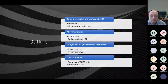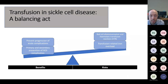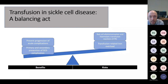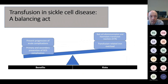Many patients with sickle cell disease will require transfusion at some stage across the lifespan. However, the decision to transfuse can be very challenging and is often described as a balancing act. The goals of transfusion include increasing oxygen-carrying capacity and reducing the proportion of hemoglobin S-containing red blood cells, to prevent progression of acute complications and for primary and secondary prevention of sickle cell-related complications.